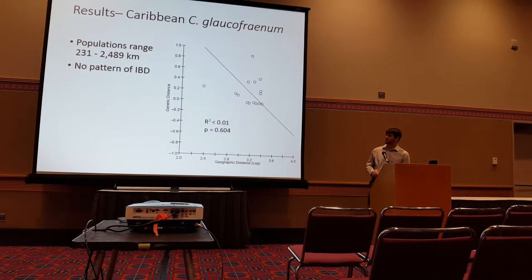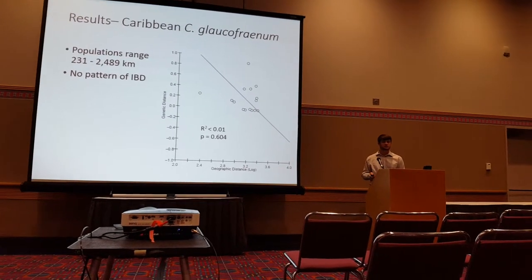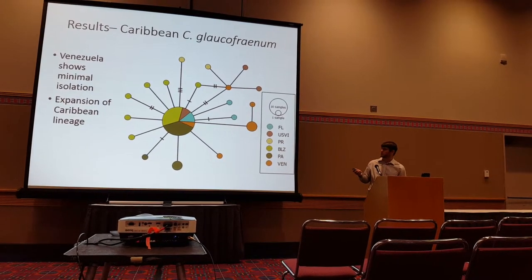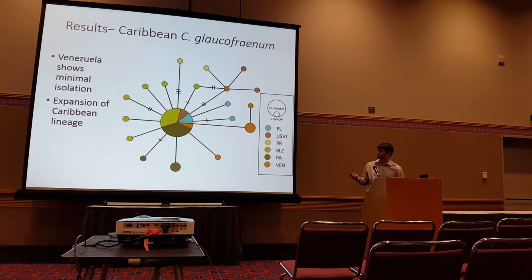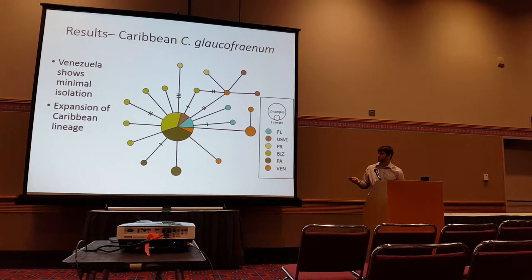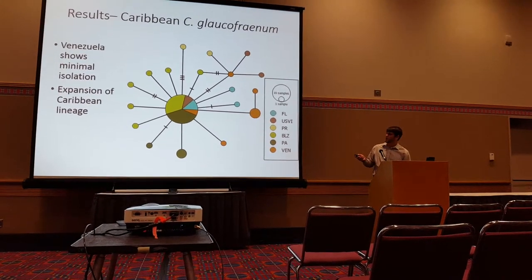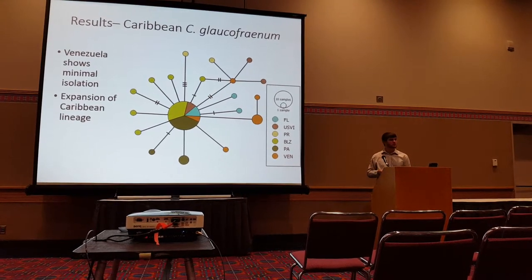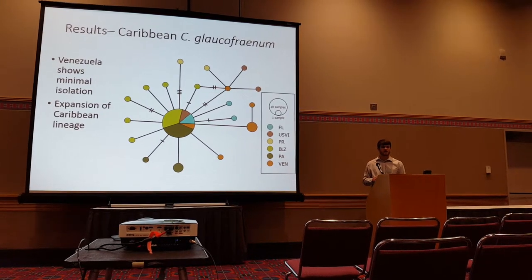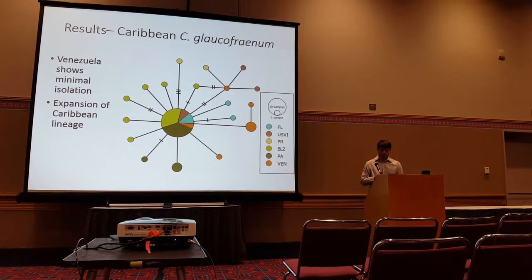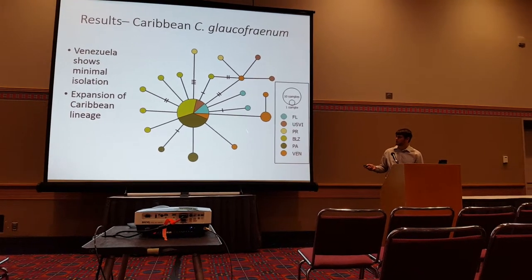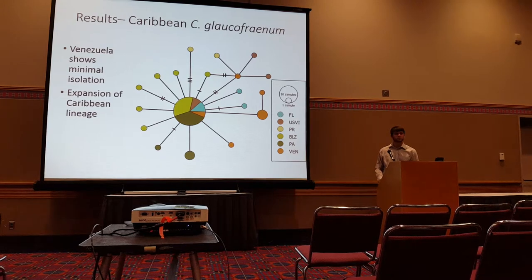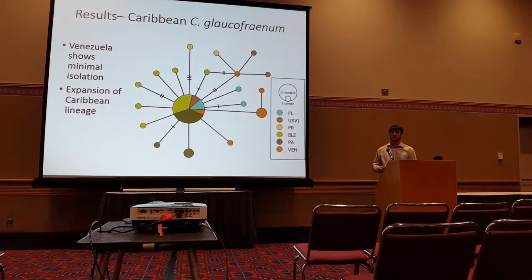Looking at the Caribbean glochophranum lineage, populations ranged from 200 to 2,500 kilometers and again showed no pattern of isolation by distance. Focusing on Venezuela in the haplotype network, it showed minimal isolation from the rest of the Caribbean and actually shared one haplotype with the most common haplotype, being only a few mutations away. When looking at pairwise genetic differentiation, it did show some slight isolation. The network shape — one common haplotype shared by almost all populations followed by many rare haplotypes only a few mutations away — generally suggests this is an expanding lineage.